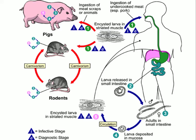The infective and diagnostic stage of Trichinella spiralis is the encysted larva in striated muscle. If we eat the muscle without it being cooked — pork tends to be a common source — we can contract Trichinella as well. After exposure to gastric acid and pepsin, the larvae are released from the cysts and invade the small bowel mucosa where they develop into adult worms, about one to two millimeters in length. The female is always larger than the male, and the male will have a curly tail.